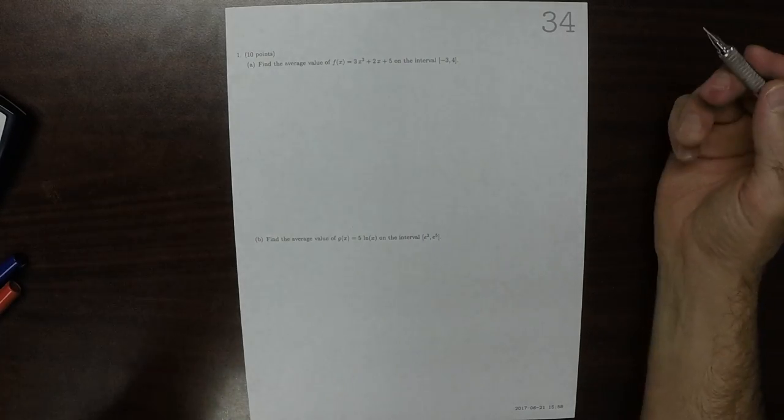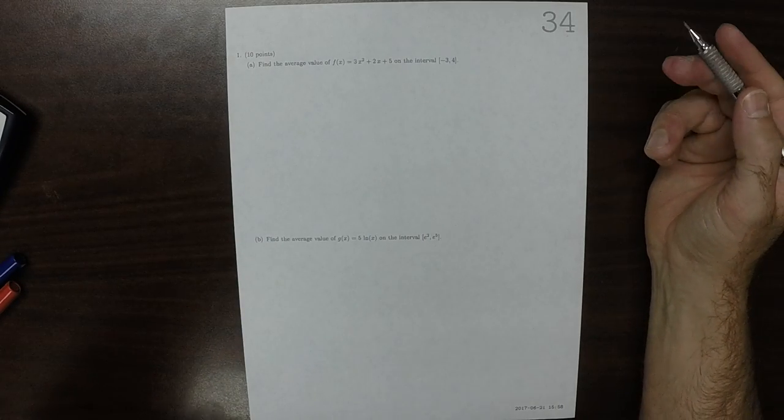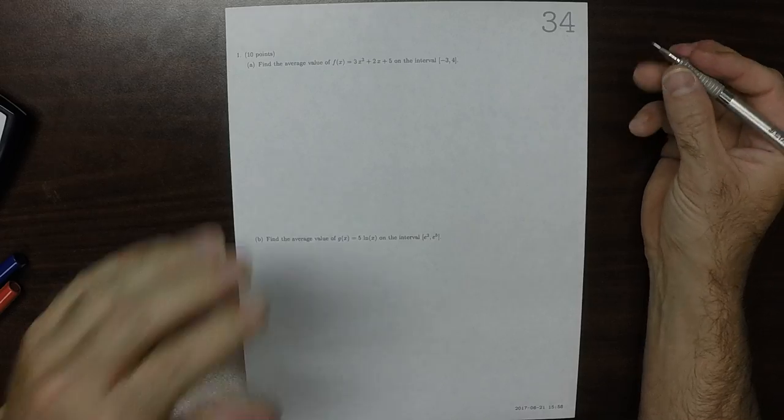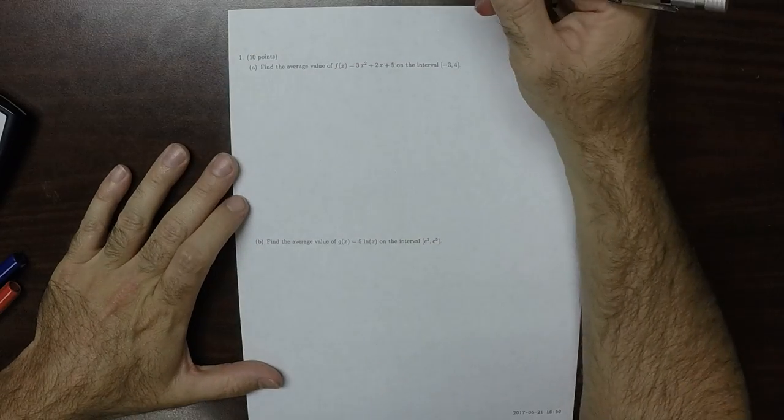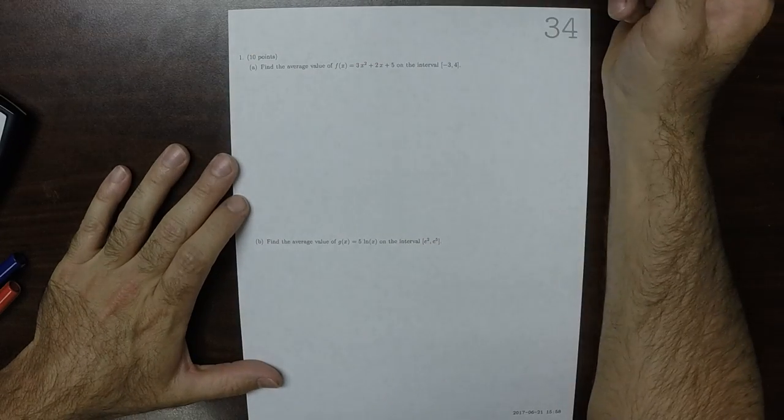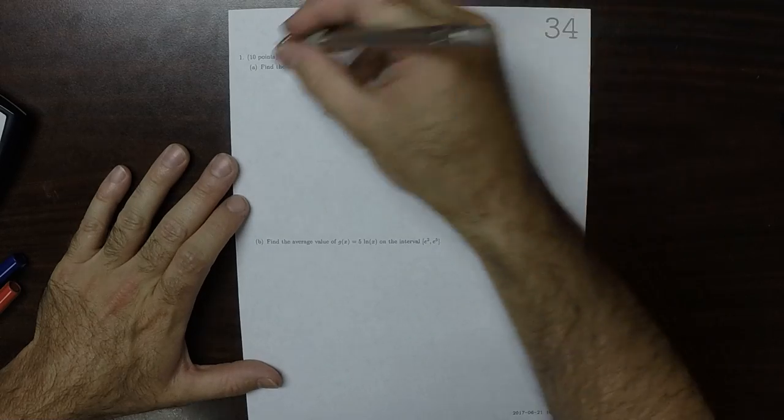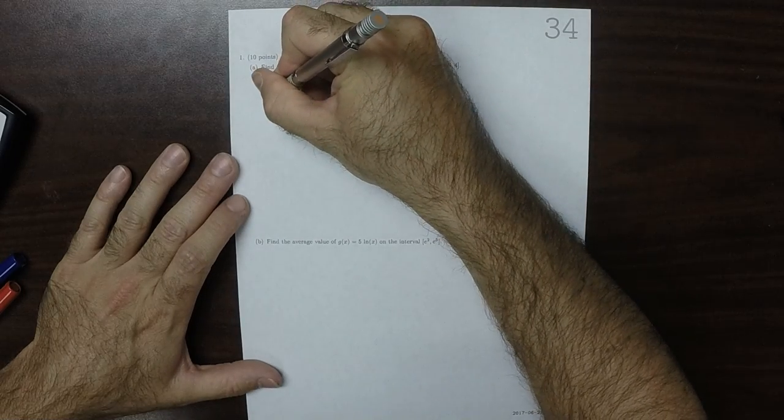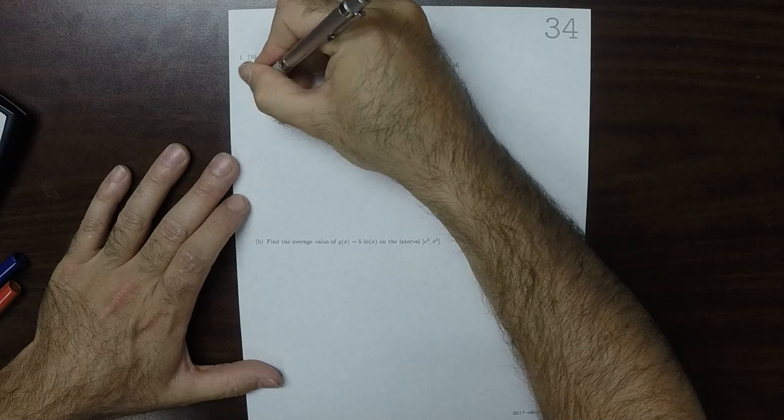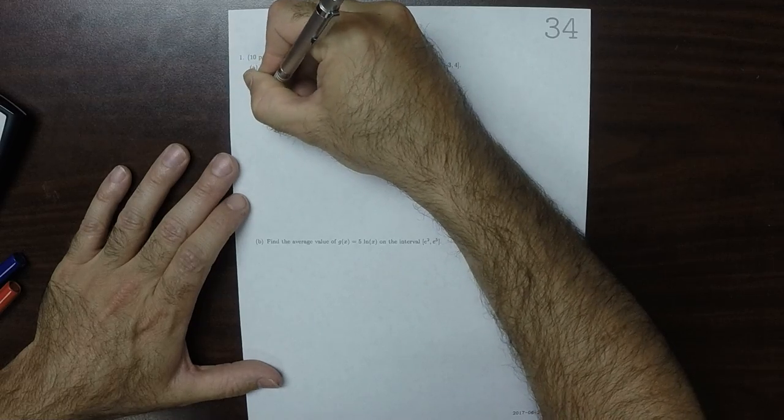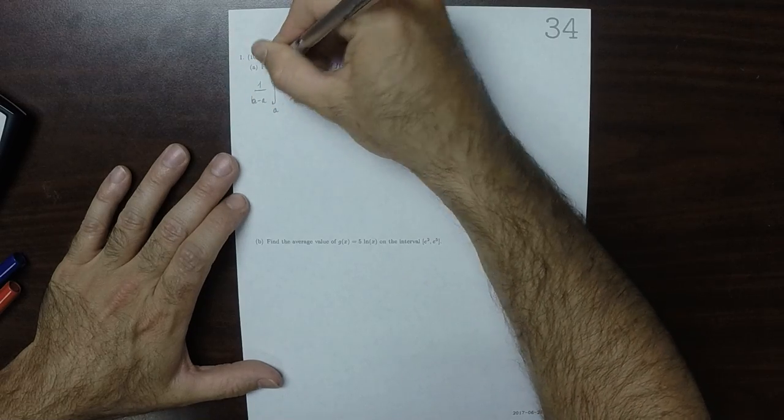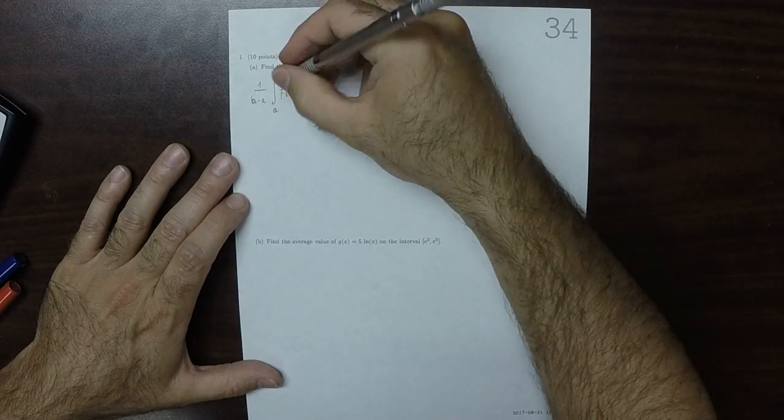This is the solution to written homework 34. So this question A is a straightforward usage of the average value formula, so it's 1 over B minus A, integral A to B, f of x dx.